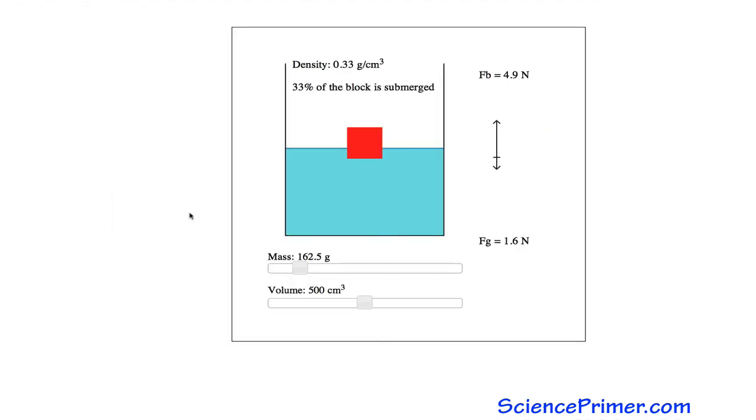An object will float as long as the buoyancy force exceeds the force of gravity acting on that object. The closer the buoyancy force is to the force of gravity, the lower the object will float. Note, if the force of gravity exceeds the buoyancy force, the object sinks.